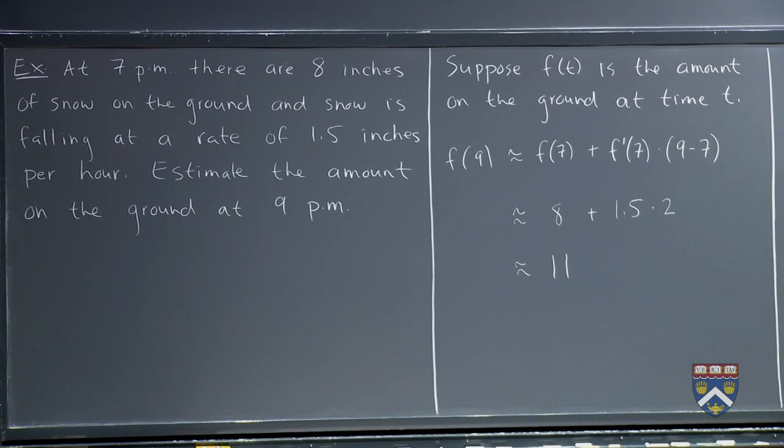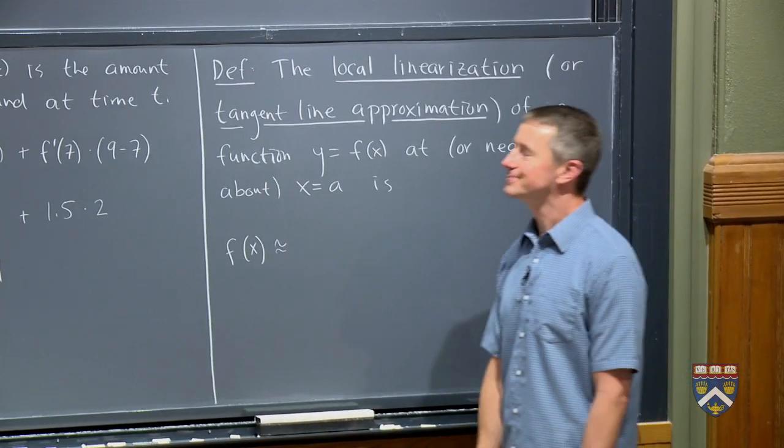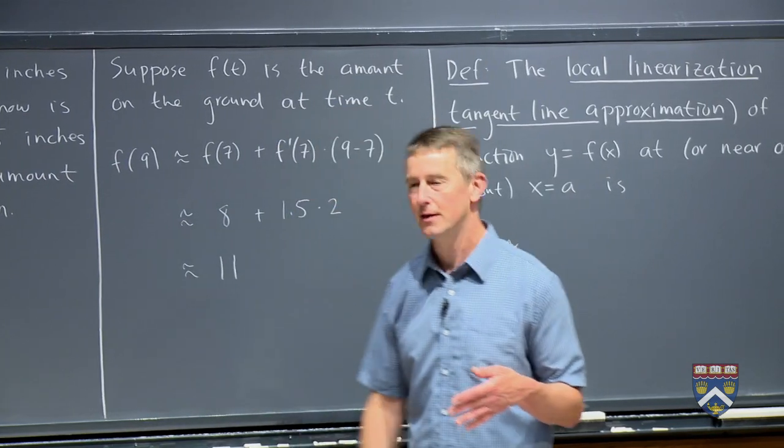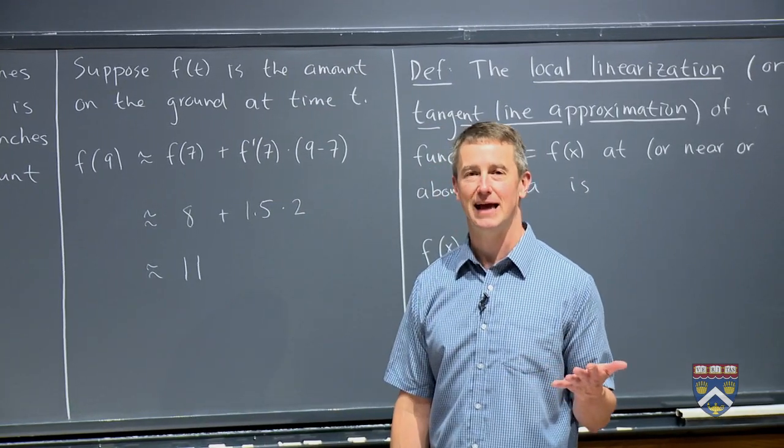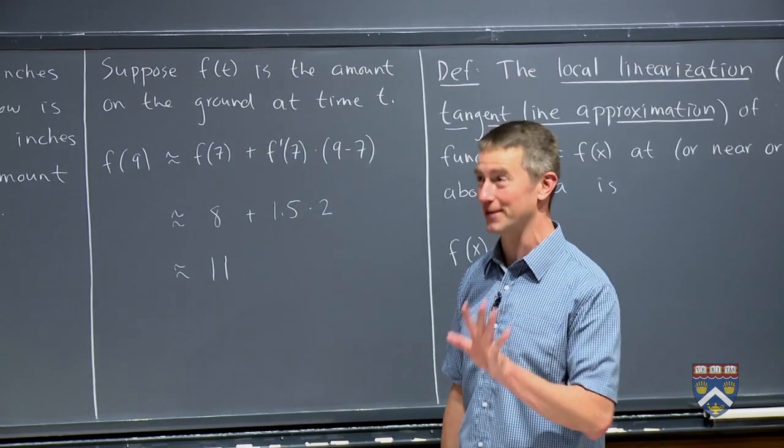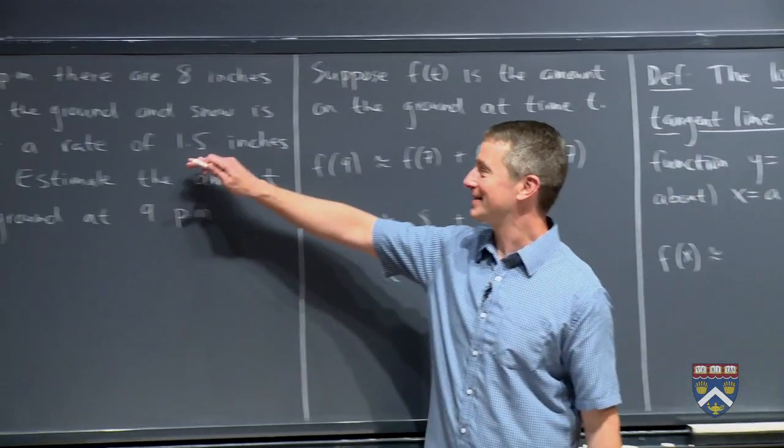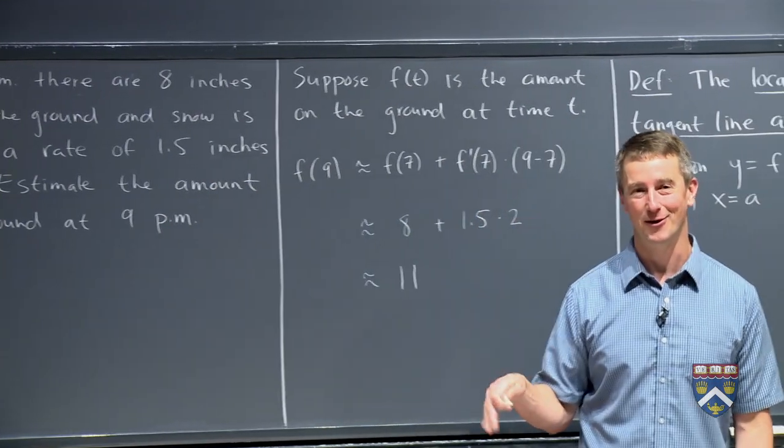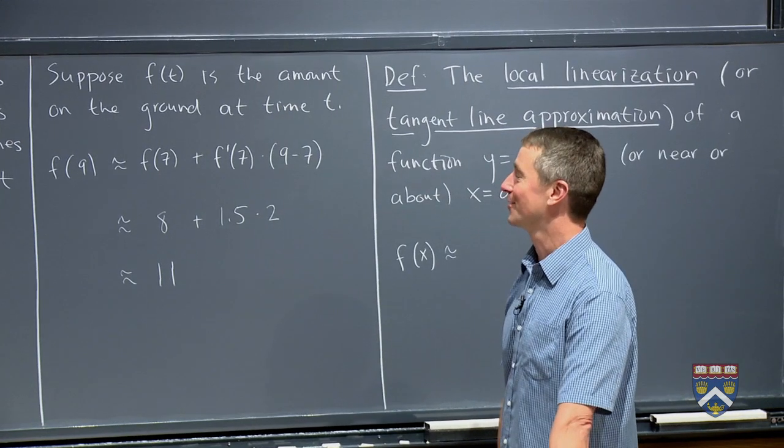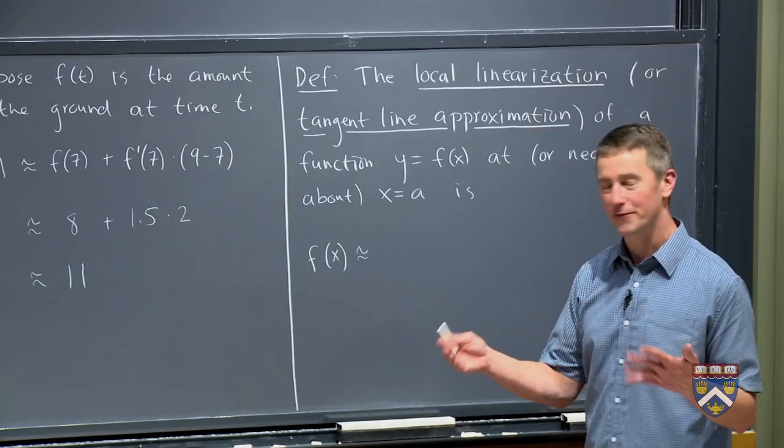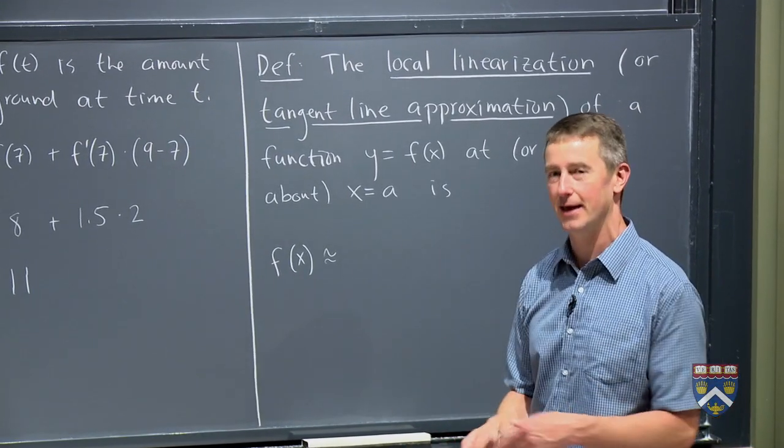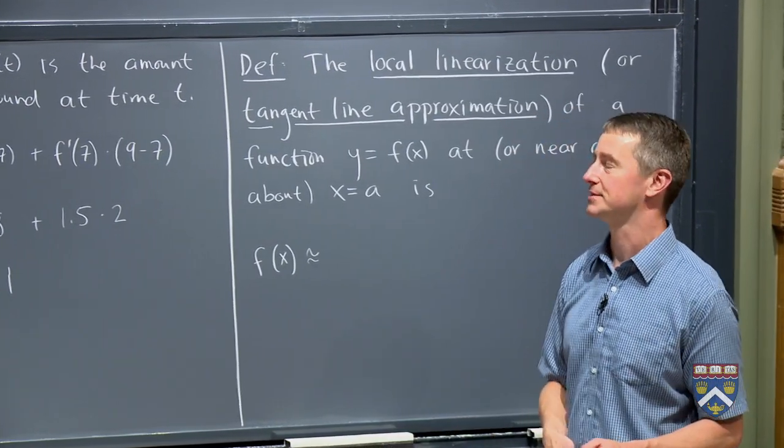And why is it called local? Because it seems reasonable to estimate the amount of snow two hours in the future. It would not seem reasonable to estimate the amount of snow two weeks in the future. You would, at least around where we live here in Cambridge, we do not expect it to snow at a rate of 1.5 inches an hour for two weeks. That would be unprecedented during our lifetimes or during recorded history here. So local, there's no official definition of what local is. You just have to use your own judgment. Two hours here seems okay. Two weeks is clearly not okay for this sort of example.